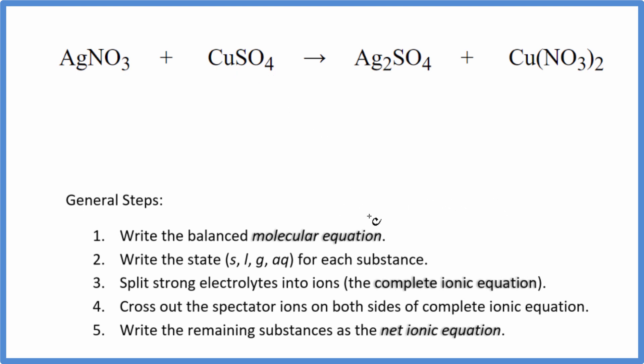When we do net ionic equations, the first thing we have to do is balance the molecular equation. I can see that I have two silver atoms here and just one here, so I'm going to put a 2 in front of the AgNO3. That balances the silvers. I have two nitrate ions on each side, a copper on each side, and a sulfate on each side. So this is the balanced molecular equation.